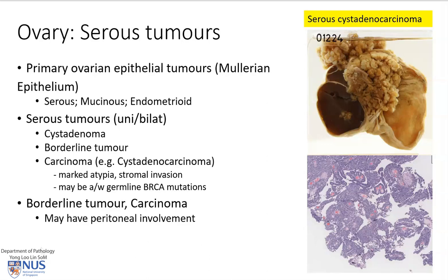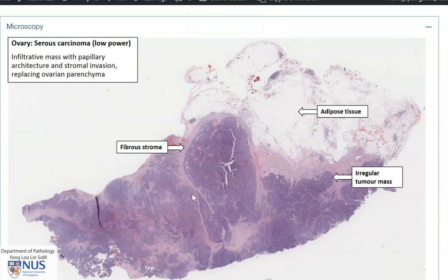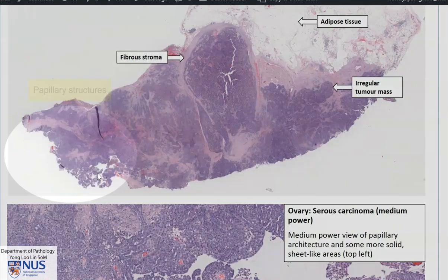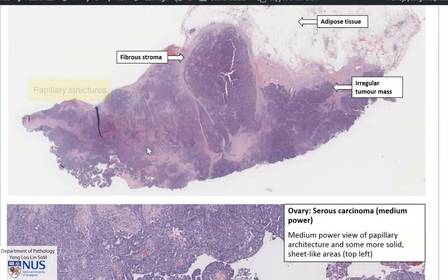Looking at the microscopic features more closely, here is a low magnification view. These pictures are taken from the PathWeb online pathology resource. We can see large blue areas signifying tumour that are clearly invading into the stroma, and at this end we can see some papillary structures protruding into the lumen of the cyst locules.